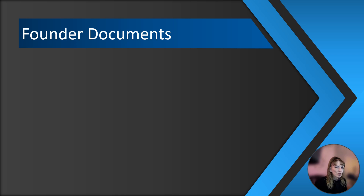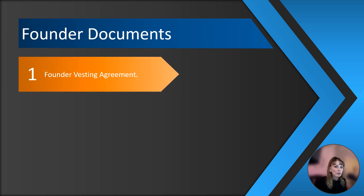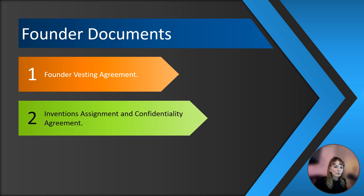Some other founding internal documents include founder vesting agreements — this is important with multiple founders. Establishing a vesting schedule for your founders ensures that people don't cut and run with their ownership, and are incentivized to stick around and do their job until the vesting is complete. Investors really like these documents too. Another very important document is the Inventions Assignment and Confidentiality Agreement — called many things, but this is the topic. Every founder and service provider should enter into this document to ensure that any intellectual property created by them during their service with the company remains with the company, and that they keep company secrets to themselves.